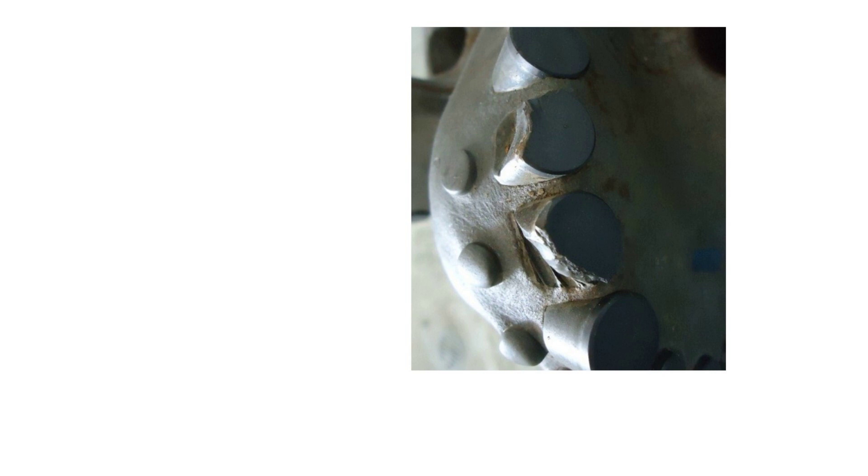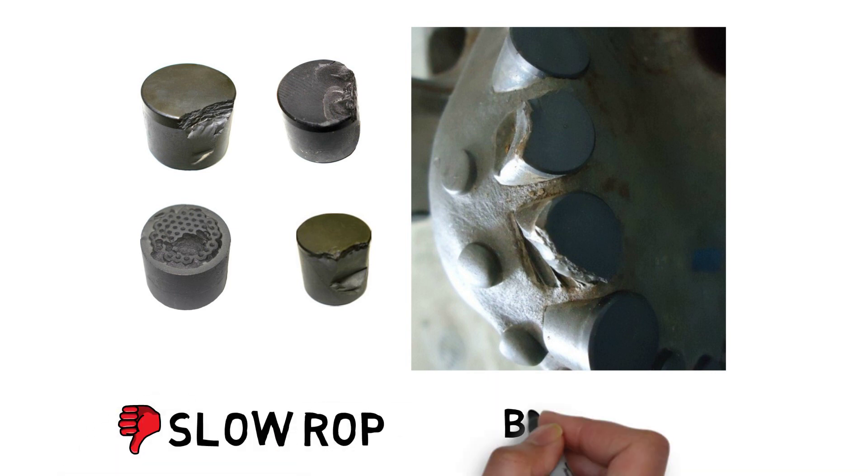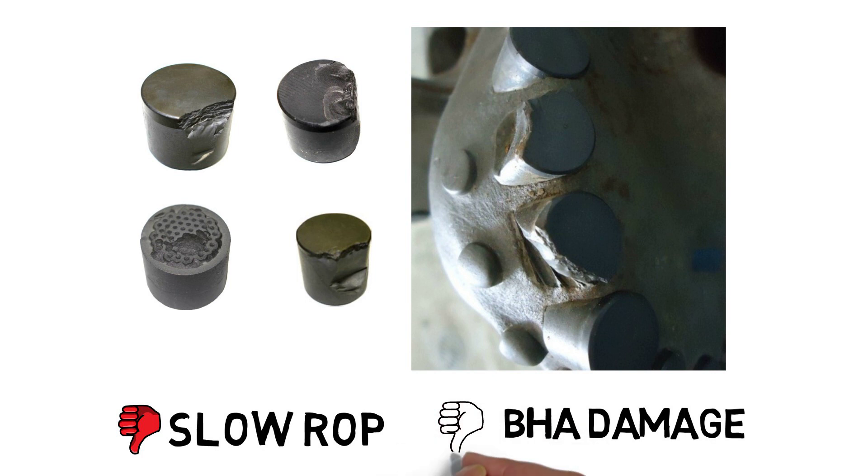Commonly, the rapid and high weight on bit and torque fluctuations lead to cutter overload across the bit phase. The outcome can be as benign as slow ROP or as severe as bit and BHA damage causing a trip out of hole to change out tools.